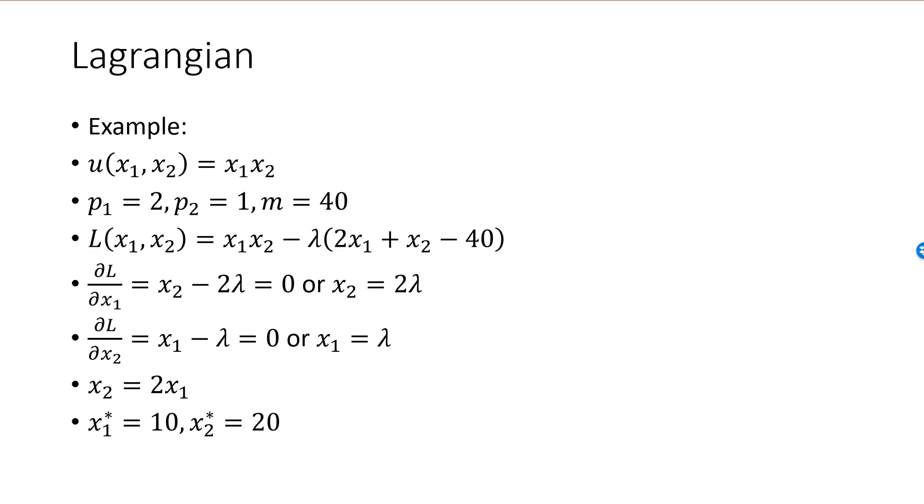As before, we combine this equation with the equation of the budget line to find the optimal bundle x1 star is equal to 10 and x2 star is equal to 20.